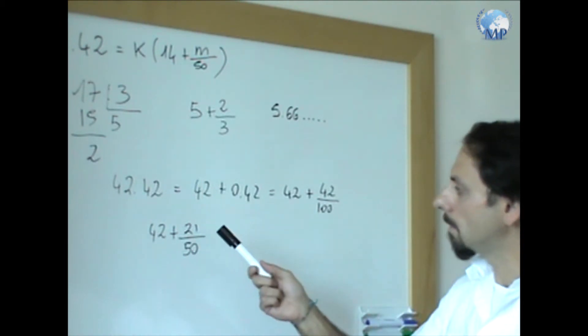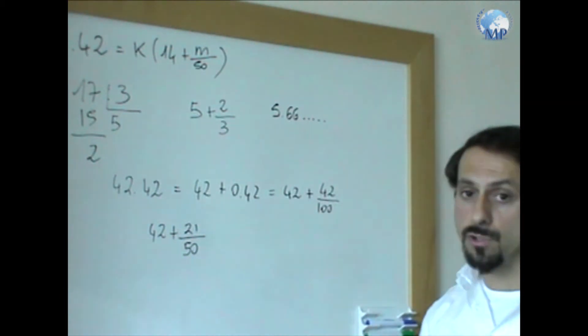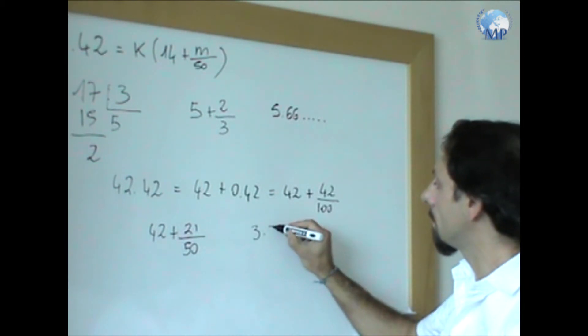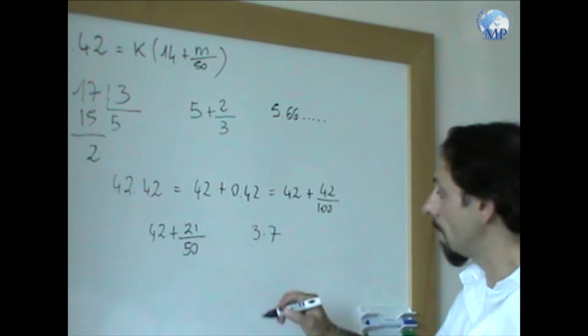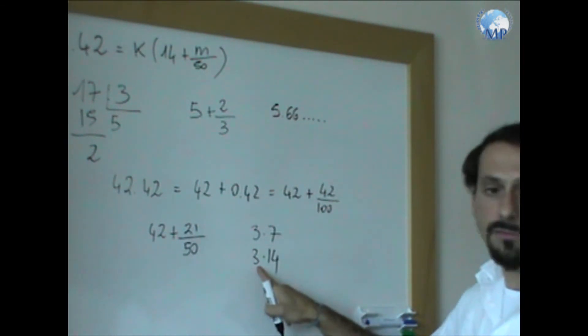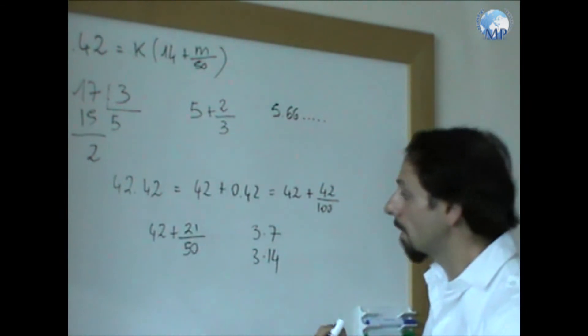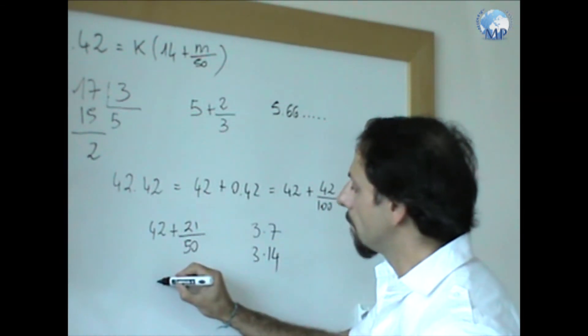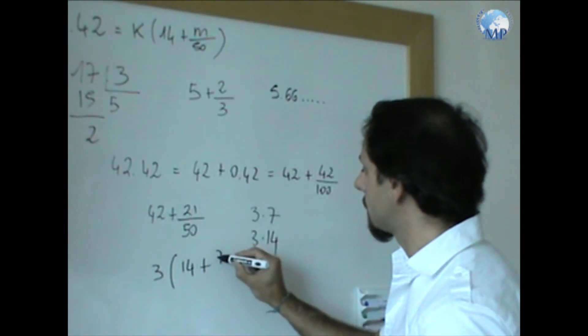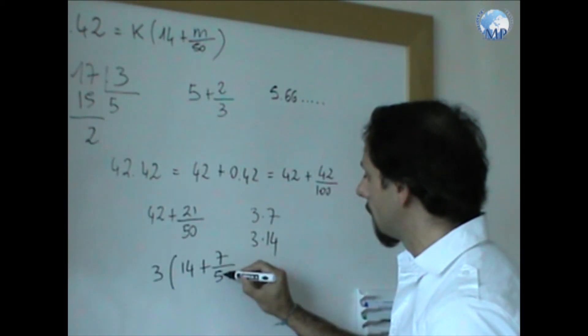Well, 21 and 42. 42 is a multiple of 21. In fact, it's 21 times 2. So if 21 is 3 times 7, 42 is 3 times 14. So I can take 3 out of brackets. So my expression would become 3, 14 plus 7 over 50.